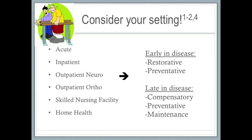Another thing to consider is where your patient is in the disease process. Early in the disease process, the focus can be more on restorative and preventative interventions because people in the beginning stages of the disease are more functional and have better capacity for return of function. Later in the disease process, compensatory interventions, as well as prevention of secondary conditions and disuse and maintenance of physical function should be optimized to promote well-being.